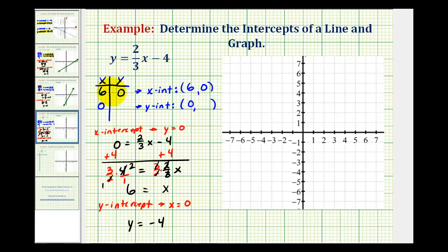So, when x is zero, y is negative four. So, our y intercept is the point zero, negative four.